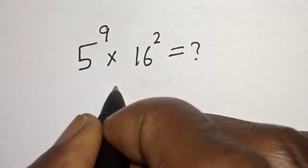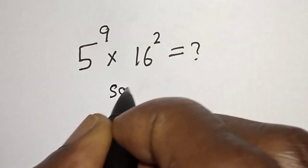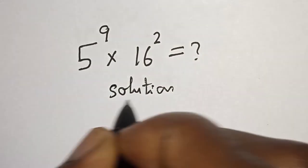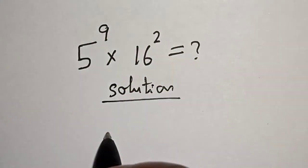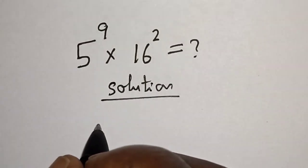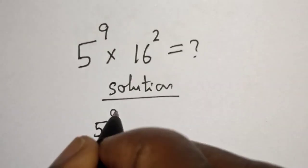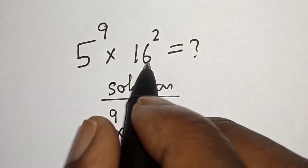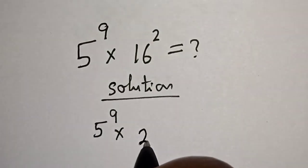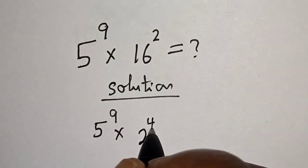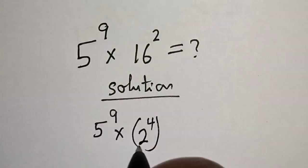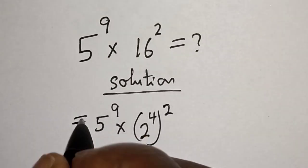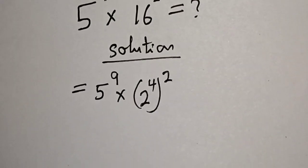Solution: we have 5 raised to power 9 multiplied by 16 squared. We rewrite 16 as 2 raised to power 4, raised to power 2. Then take note of this exponential rule.